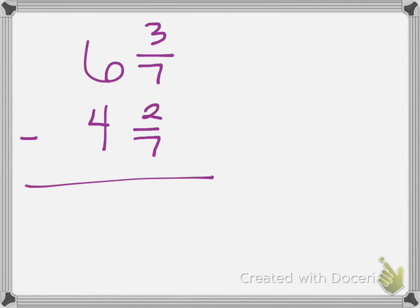Moving on to subtraction, it's much easier because you normally won't have to take any of the fraction and convert it into wholes. So starting with my fraction I have 3 sevenths minus 2 sevenths, which gives me 1 seventh, and then I subtract my wholes, 6 minus 4 is 2.